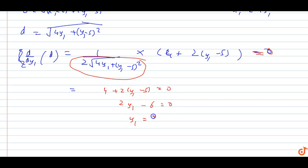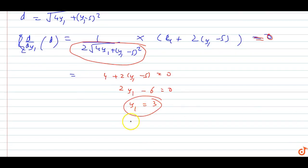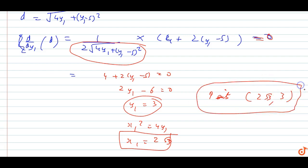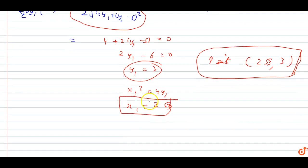Now x₁² = 4y₁, so x₁² = 12, which means x₁ = ±2√3. The points are (2√3, 3) and (-2√3, 3).